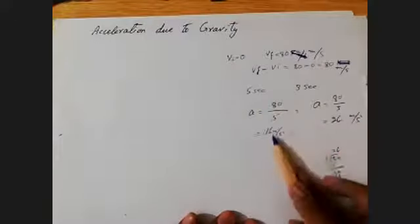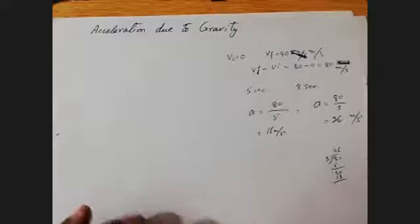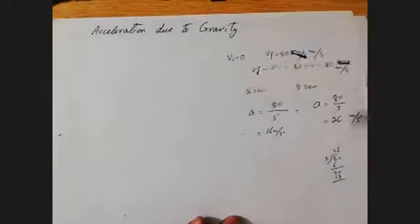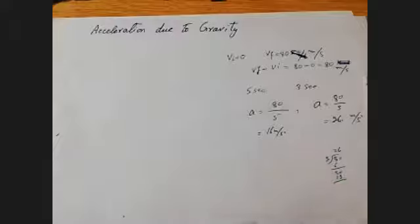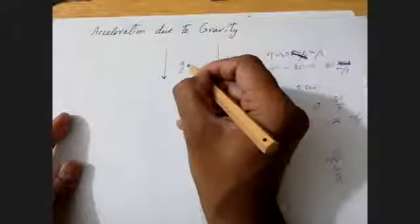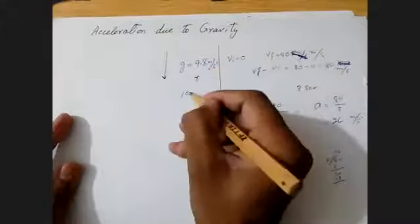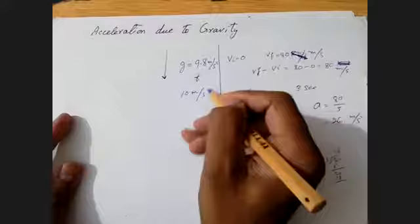Now I just wanted to give you that example of acceleration because certain students do not understand what is behind it. Now, acceleration due to gravity — whether bodies are heavier or lighter, they fall with a constant acceleration. That acceleration is represented by small g, and its value ranges from 9.8 meter per second squared to 10 meter per second squared.